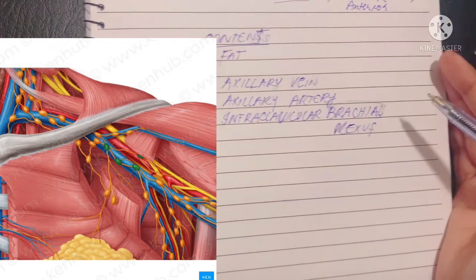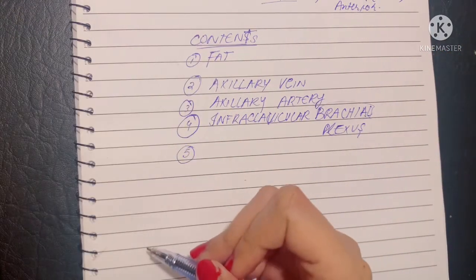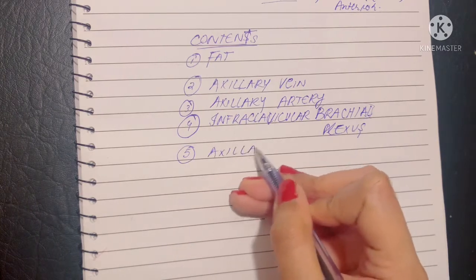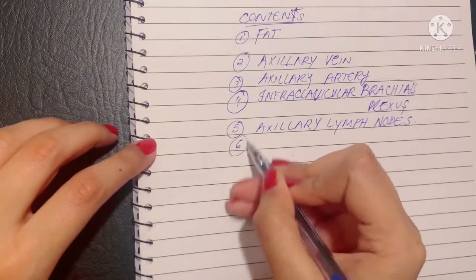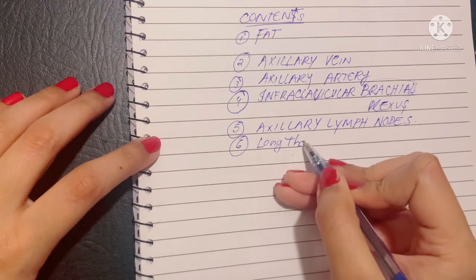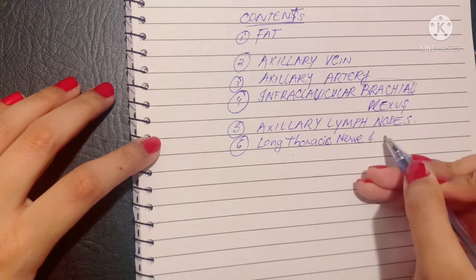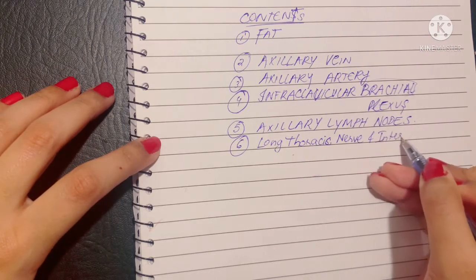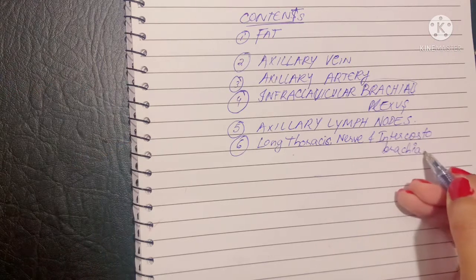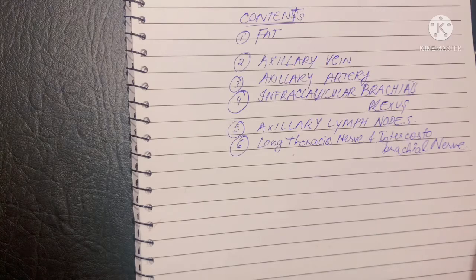And number five, we have the axillary lymph nodes that we studied in the breast. And six, we have the long thoracic nerve. This was the nerve that supplied the serratus anterior. Along with this, there is another nerve called the intercostal brachial nerve. It also supplies the upper part of the arm. So that was all about the contents of axilla.